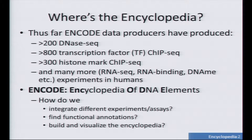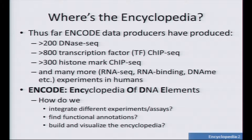ENCODE has been tremendously successful getting all of these human experimental datasets up. We have hundreds and hundreds of datasets over several different assays. But the first three letters of ENCODE — E, N, C — are for encyclopedia, and we don't quite have that yet. This is something that's becoming an increasing concern, discussed at some of the ENCODE consortium meetings. We'd like to integrate this data together, figure out the functional elements, and build and visualize the encyclopedia.